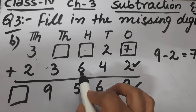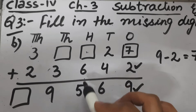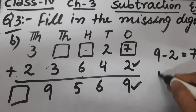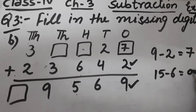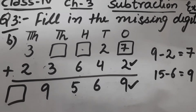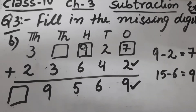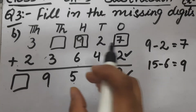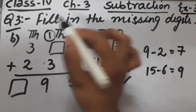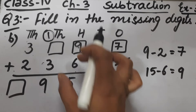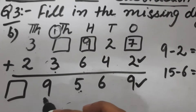What should we add to 6 to get 5? That's not possible, so we need what to add to 6 to get 15. We subtract 6 from 15, which gives 9. So 9 will come here. Since it was 15, 5 will come here and 1 will be carried.